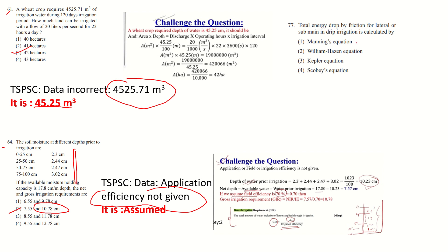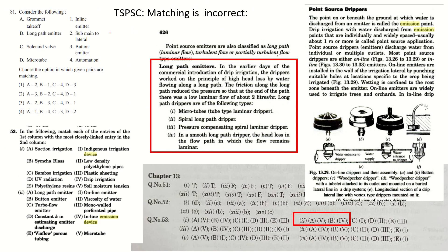For Question 77, if you look at the answer carefully, they have mentioned drip irrigation. The Williams-Hazen equation is used to calculate friction losses. However, if drip irrigation is not explicitly mentioned, the fourth option could also become correct. Since TSPSC has mentioned drip irrigation, the answer is option 2. There is a concept mismatch in this question.